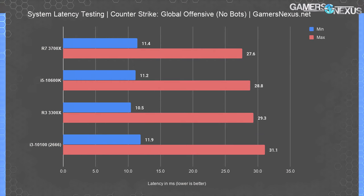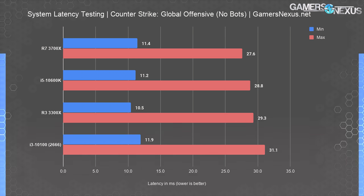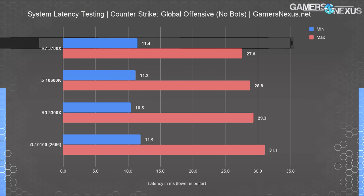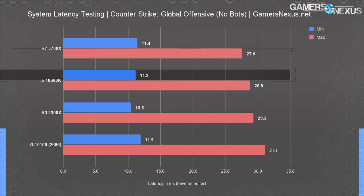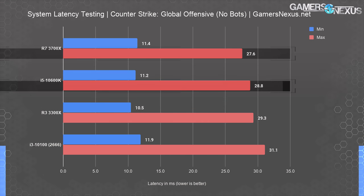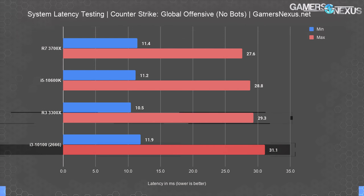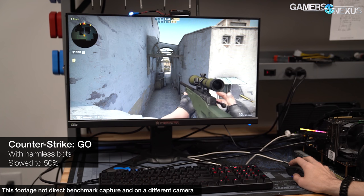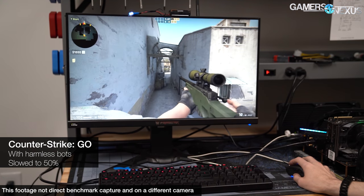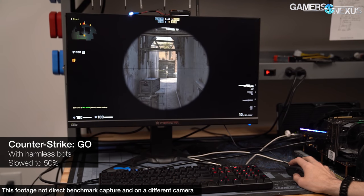Looking at max and min charts against the 80–90 test passes, results were more variable in Counter-Strike than in some other titles tested, ranging between about 11ms at the low end and 29ms at the high end. Minimum values ran 11.4ms on the 3700X and 11.18ms on the 10600K — within error. Max values were 27.6 and 28.8, again within variance. For the lower end CPUs, worst case was 31.1ms on the 10100 and 29.3ms on the 3300X. A character model blocking a large part of the screen raises the frame rate and therefore lowers latency in a considerable fashion.